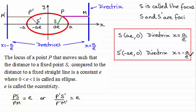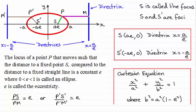Now it can also be shown that the Cartesian equation for the ellipse is x squared over a squared plus y squared over b squared equals 1, where the constant b squared is given by a squared times (1 minus e squared).